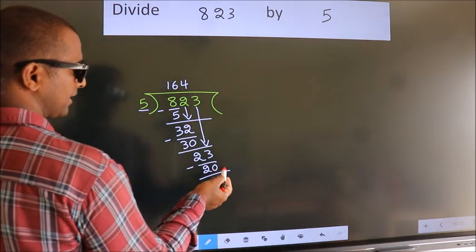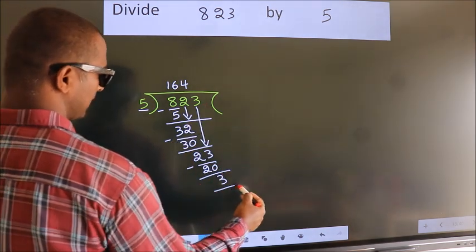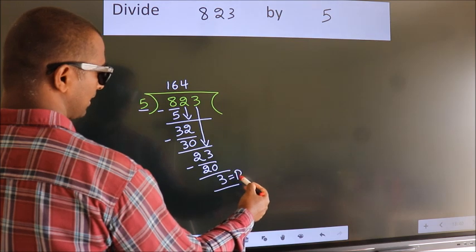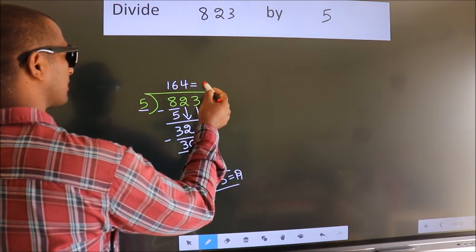No more numbers to bring down. So we stop here. This is our remainder. This is our quotient.